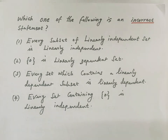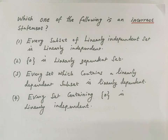Question 1: Which one of the following is an incorrect statement? Option 1: Every subset of a linearly independent set is linearly independent. Option 2: The zero vector is a linearly dependent set. Option 3: Every set which contains a linearly dependent subset is linearly dependent. Option 4: Every set containing the zero vector is linearly independent.